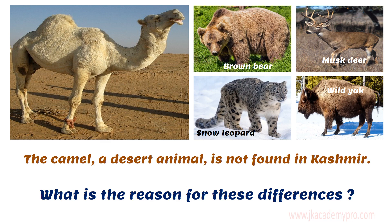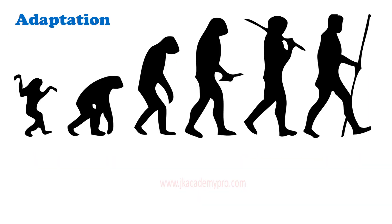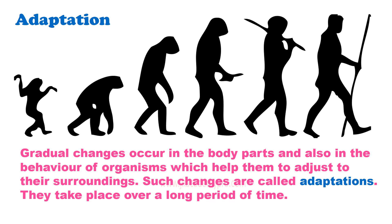What could be the reason for these differences? This is because of adaptation. So what is adaptation? Gradual changes that occur in the body parts and also in the behaviour of any organism, which help them to adjust to their surroundings — such changes are called adaptations. These adaptations do not happen overnight; they take a very long time to show the gradual changes. Just like in the picture, we can see how humans have adapted themselves to the present-day human being.